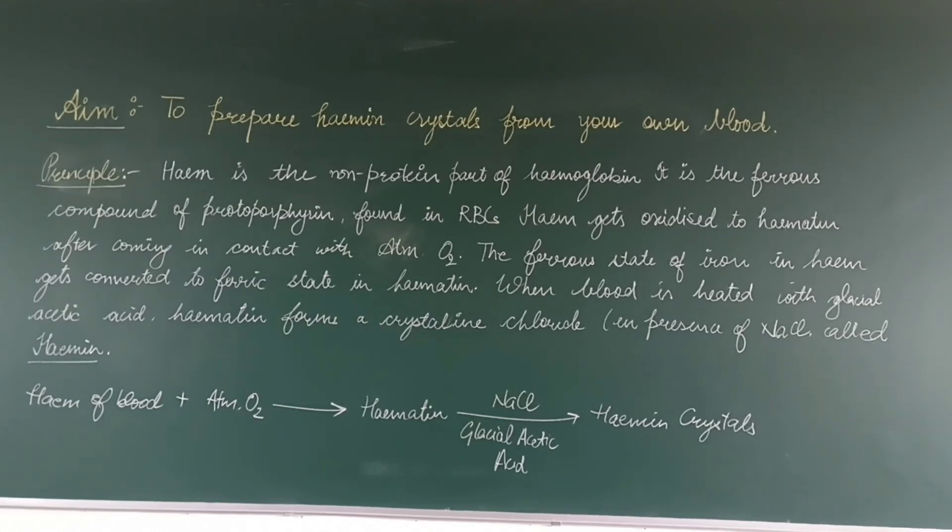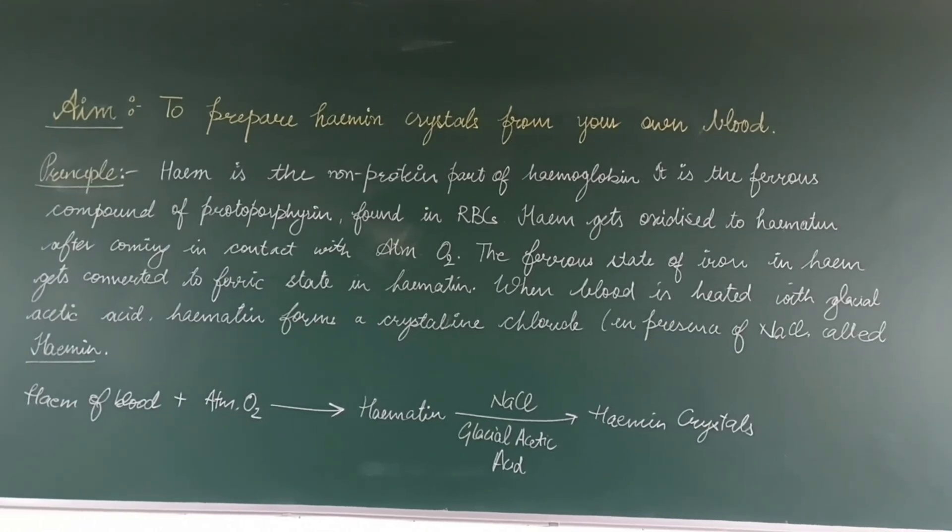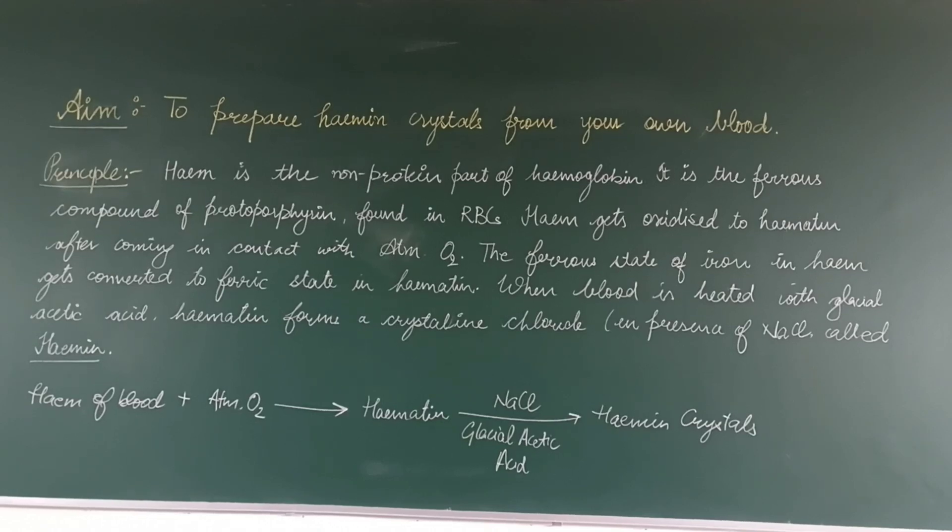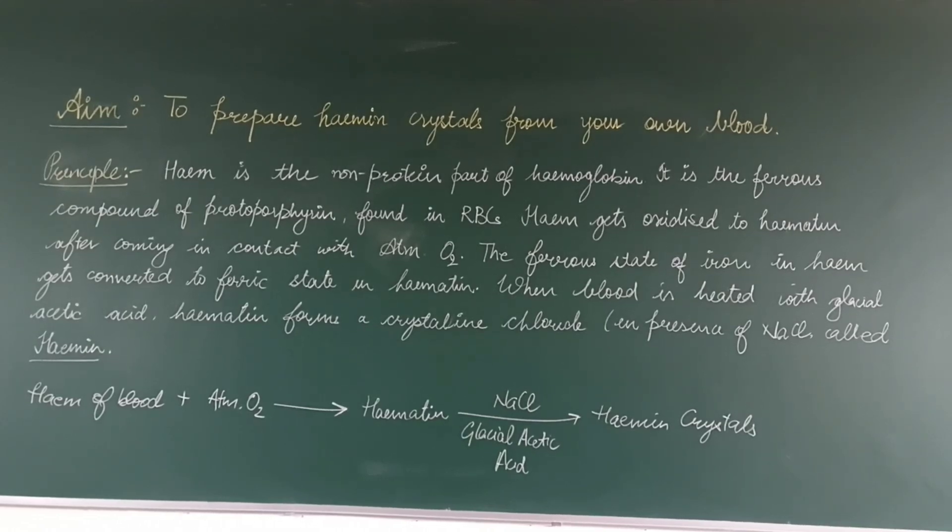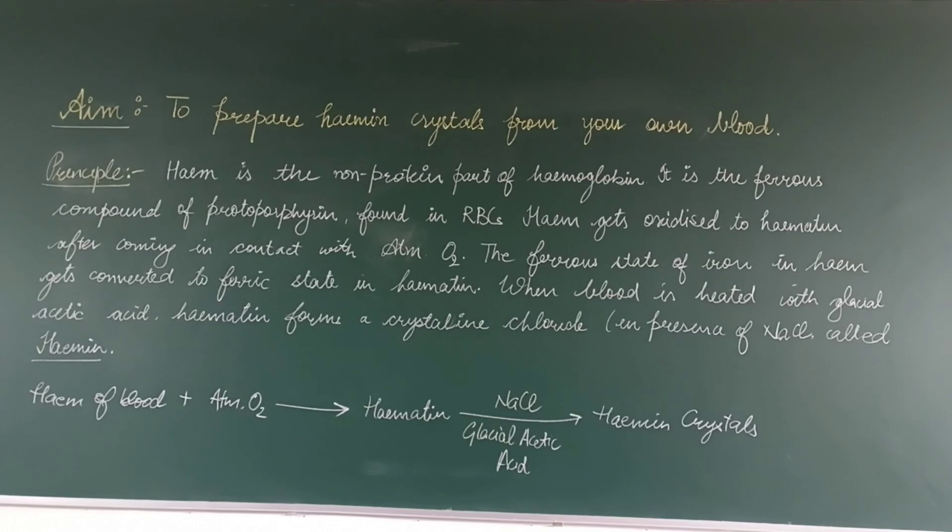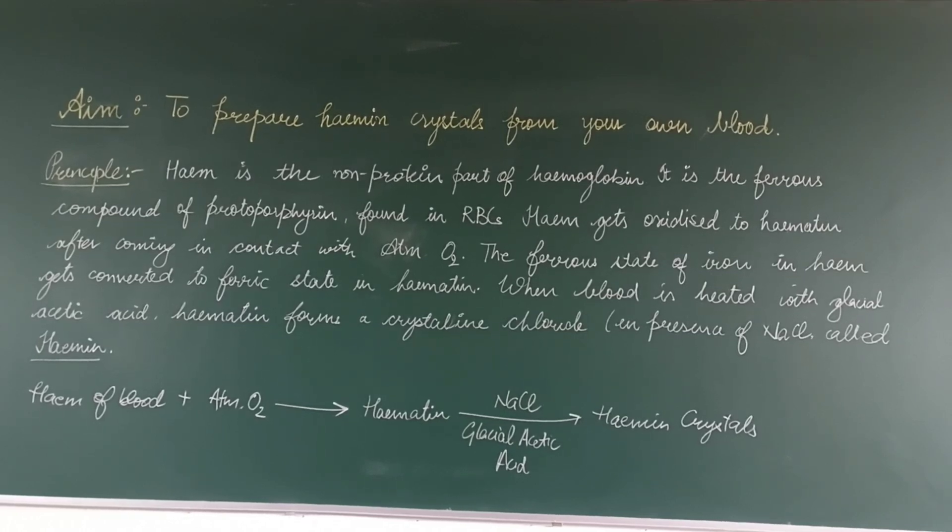As you know, heme is present in the blood. It comes in contact with atmospheric oxygen and is converted to hematin. In presence of NaCl and glacial acetic acid, it forms hemin crystals.